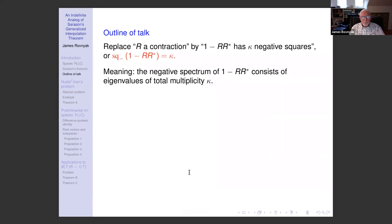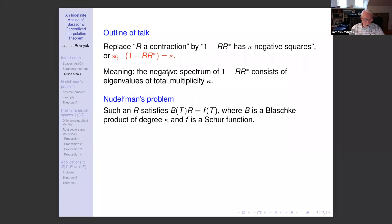In this talk, I will replace the condition that R is a contraction by the condition that 1 − RR* has κ negative squares. κ is always a non-negative integer. The meaning of this condition is that the negative spectrum of the self-adjoint operator 1 − RR* consists of a finite number of eigenvalues of total multiplicity κ. I'll begin by showing that in Sarason's theorem, if 1 − RR* has κ negative squares, then R satisfies an operator identity B(T)R = F(T), where B is a Blaschke product of degree κ and F is a Schur function. This will use an abstract interpolation method known as the Nudelman problem.